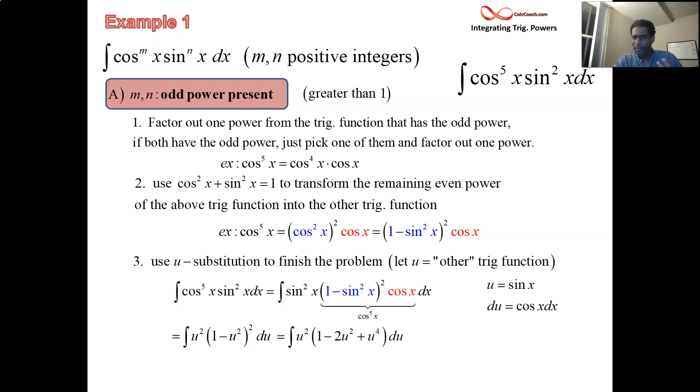Go ahead and distribute that u squared into that, and you'll see you have a polynomial integral. We love polynomial integrals, polynomial integrals are great. Integrating a polynomial is one of the easiest thing you can do. And so here we go, u squared minus 2u fourth plus u sixth. Integrating a polynomial is the power rule in reverse. You're just adding 1 to the exponent and dividing by the same thing.